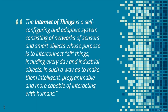The Internet of Things is a self-configuring and adaptive system. It consists of networks of sensors and smart objects. The goal of the Internet of Things is to interconnect these objects and sensors and create an intelligent ecosystem of these objects.